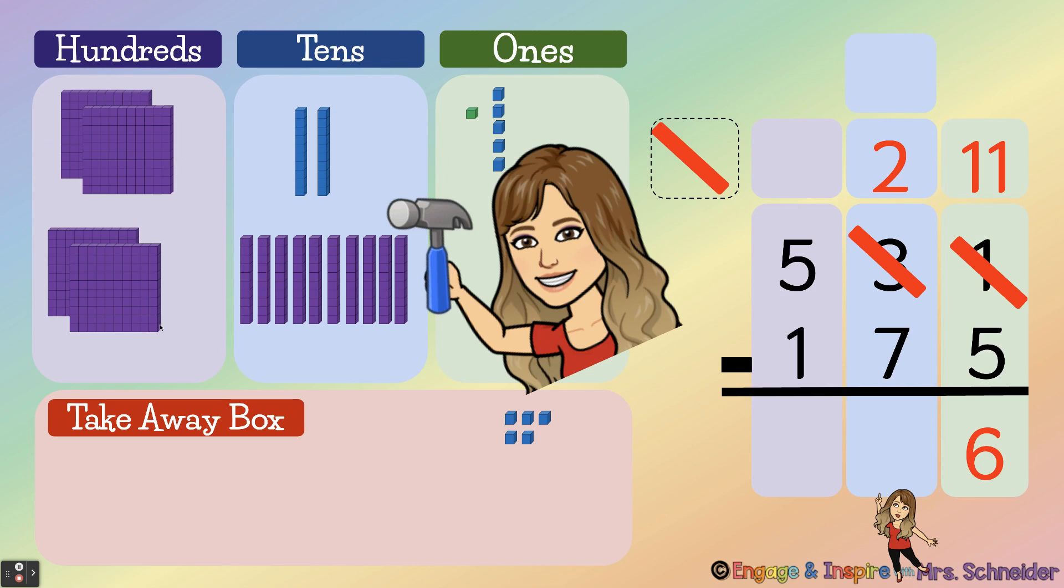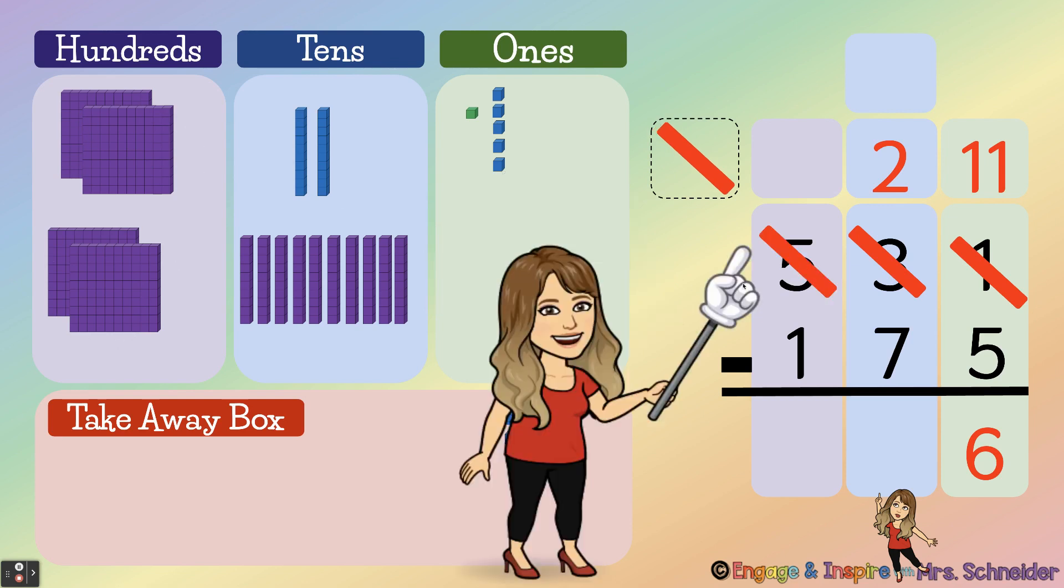So we need to look at what we did over here. Do I still have five hundreds in my hundreds place? No I don't. So I need to cross out that five because I don't have five hundreds there anymore. I had regrouped one into the tens. So I'm going to cross out the five and I'm going to change it to one number less because I put one hundred over here. So I'm going to turn the five into a four.